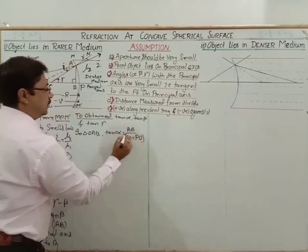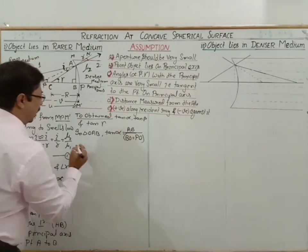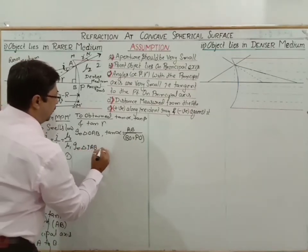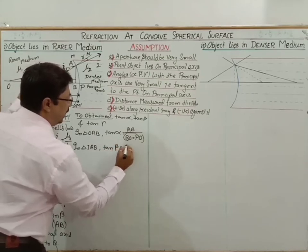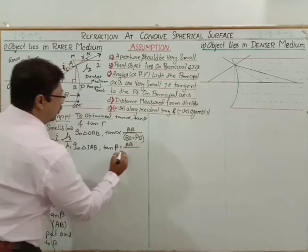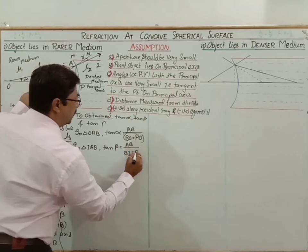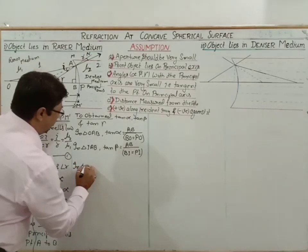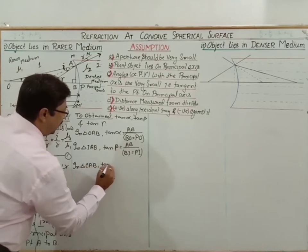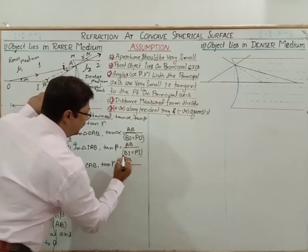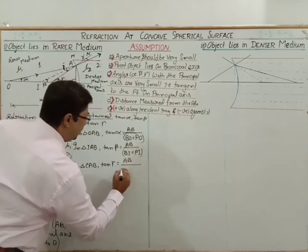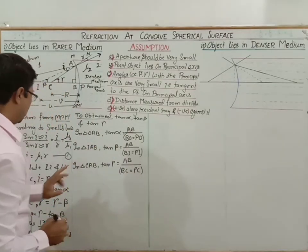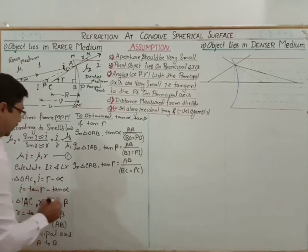In triangle CAB: tan(gamma) = AB / BC, and BC ≈ PC, so tan(gamma) = AB / PC. Now all three values are obtained: tan(alpha) = AB/PO, tan(beta) = AB/PI, tan(gamma) = AB/PC. Now substitute these into the expressions for angle i and angle r.